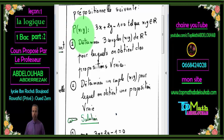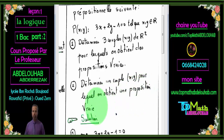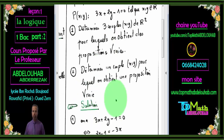Je vais citer un exemple d'une fonction prépositionnelle à deux variables. Je l'ai nommée P(x,y), puisqu'elle contient deux variables x et y : 3x+2y−1=0, tel que (x,y) appartient à ℝ². Déterminez trois couples (x,y) de ℝ² pour lesquels on obtient des propositions vraies, et déterminez un couple (x,y) pour lequel on obtient une proposition fausse.